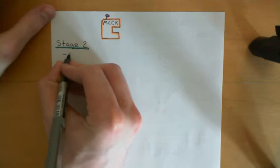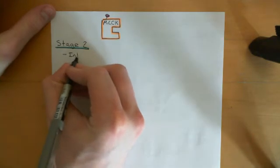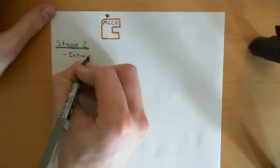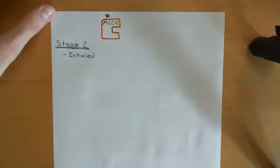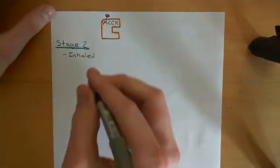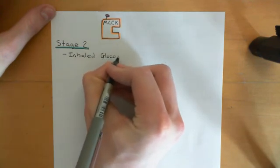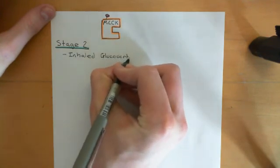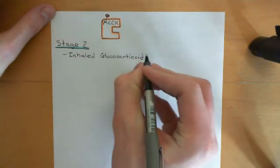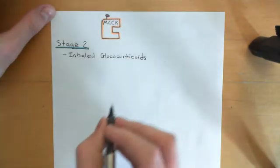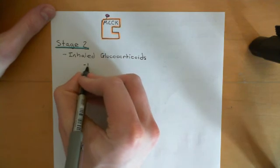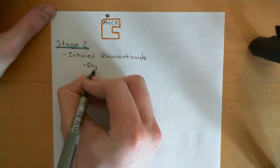Stage two anti-asthmatic therapy involves taking an inhaled glucocorticoid. And these are given routinely. Generally, it's once every 12 hours, so once in the morning, once at night. So inhaled glucocorticoid. Now inhaled glucocorticoids are given with dry inhalers. Now let me explain what a dry inhaler is.